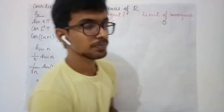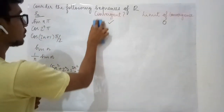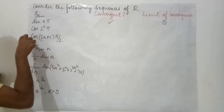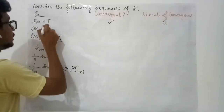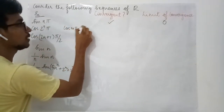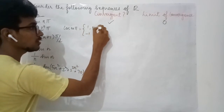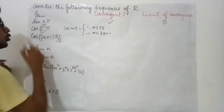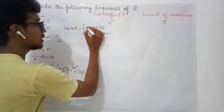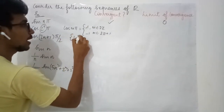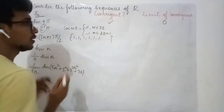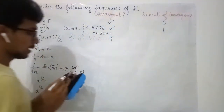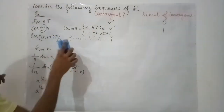Using the same idea for sin(nπ), we can analyze cos(2ⁿπ). Note that cos(mπ) is either 1 (when m is even) or −1 (when m is odd). Since 2ⁿ is always even, we always land in the even case, and the sequence is simply 1, 1, 1, 1, … Therefore the limit is 1 and the sequence is convergent.